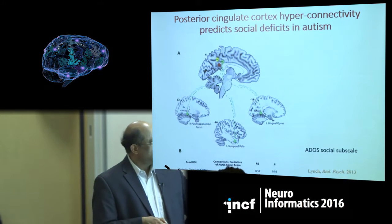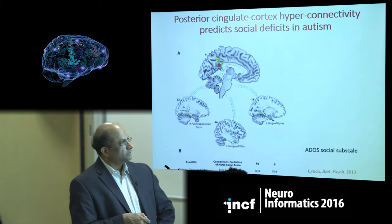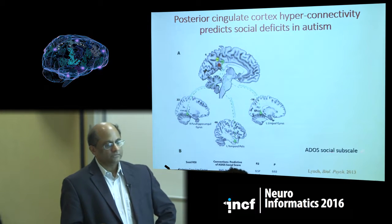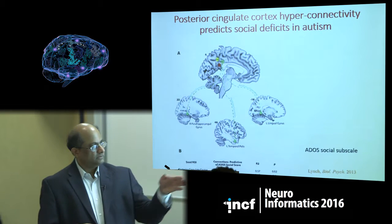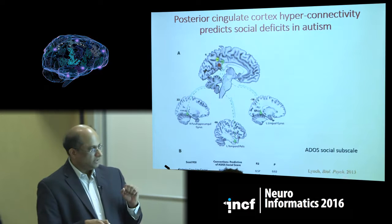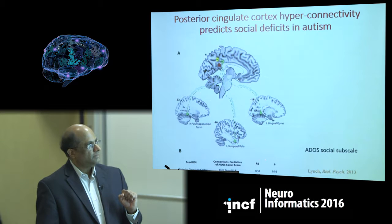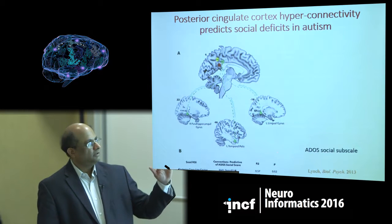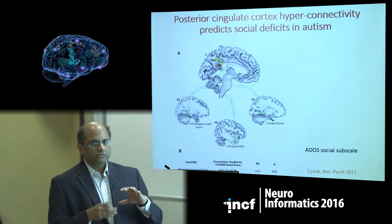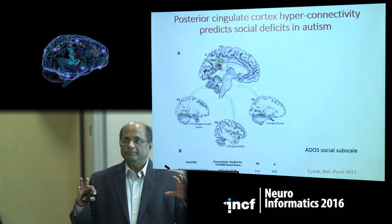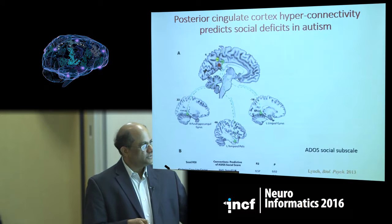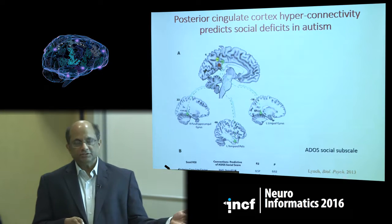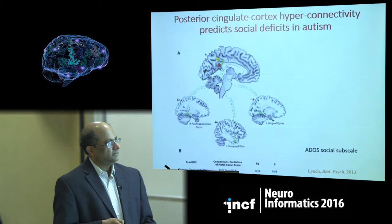It turns out that connections of the posterior cingulate cortex are actually predictive of the subscale measure of social abilities in children with autism. This hints at out-of-network cross-wiring as a metric related to dysfunction. Some set of links have gone awry and these are good candidates, and we're trying to understand them with functional imaging tasks.